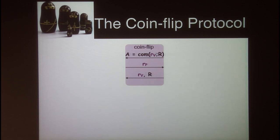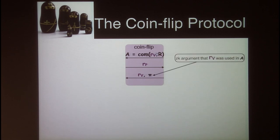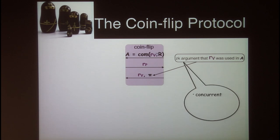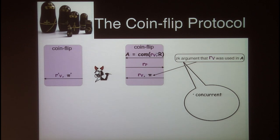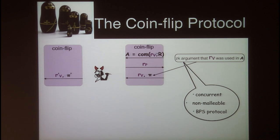The modification we introduce is that instead of the verifier opening the commitment by sending both the committed value and the randomness, we have him send just the committed value and a zero-knowledge argument that RV was indeed the value used in the commitment. Using the simulator of this underlying zero-knowledge argument, our simulator will also work. Since we are in the concurrent setting, we need a concurrent zero-knowledge argument. Furthermore, we require that the adversary should not be able to bias the outcome of the coin flipping protocols of the left sessions after receiving simulated proofs — hence we require non-malleability. So what we require here is a concurrent non-malleable zero-knowledge argument, and BPS is exactly that. In our protocol, we use this specific BPS protocol.